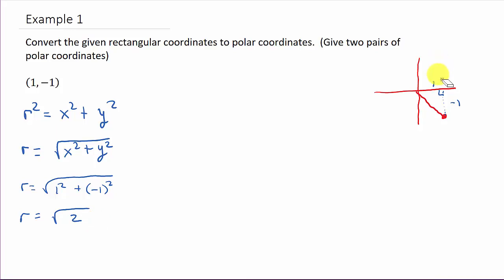Okay, so there's different answers. We know that tangent theta is equal to y over x. So that's negative 1 over 1. So we know that tangent theta is equal to negative 1.